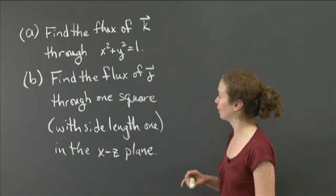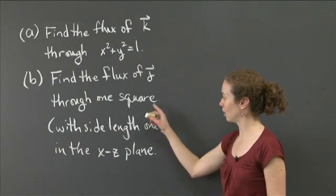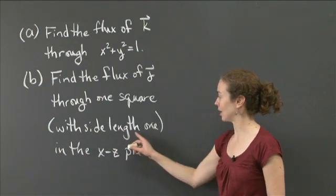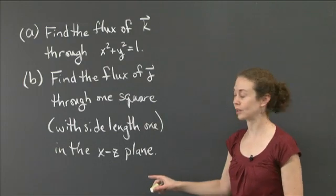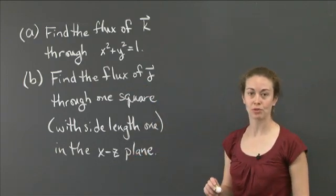And then the second problem I'd like you to think about and to try is to find the flux of the vector j through one square that has side length 1 in the xz plane. So you pick any square in the xz plane of side length 1 and find the flux of j through that square.